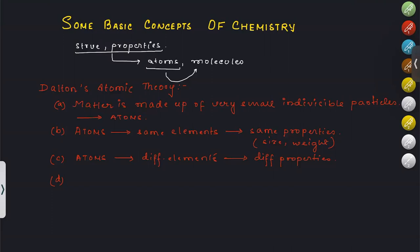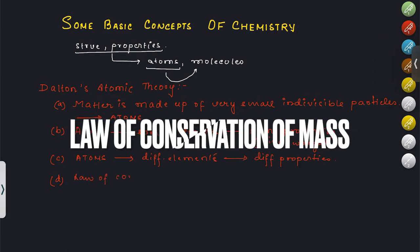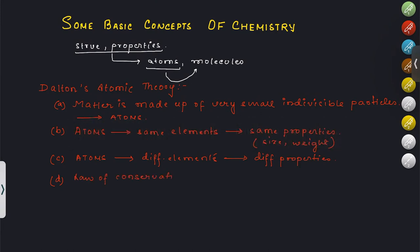The fourth postulate is based on the Law of Conservation of Mass. According to Dalton, atoms can neither be created nor destroyed. Dalton's Atomic Theory was given around the 19th century, but this Law of Conservation of Mass was given earlier by Lavoisier.